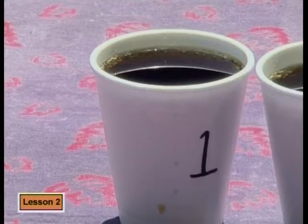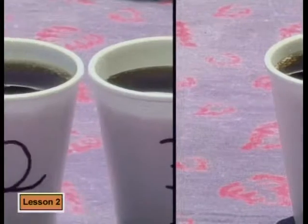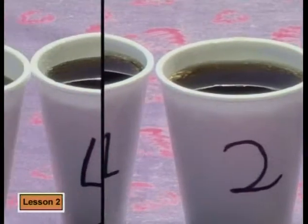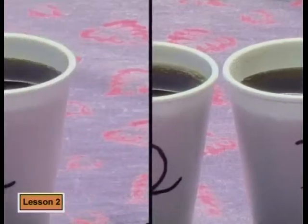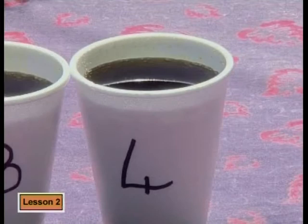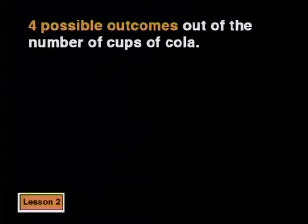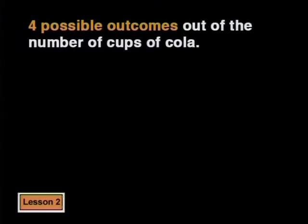Well, there are four possibilities — it could be this one, this one, this one, or this one. So we have four possible outcomes, but only one of them has Koala Cola in it. That means only one out of the four possible outcomes will be correct.